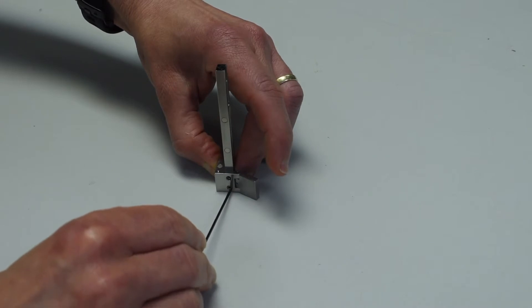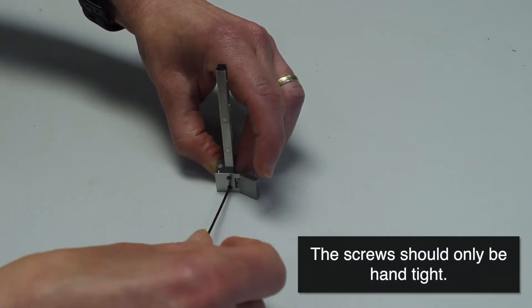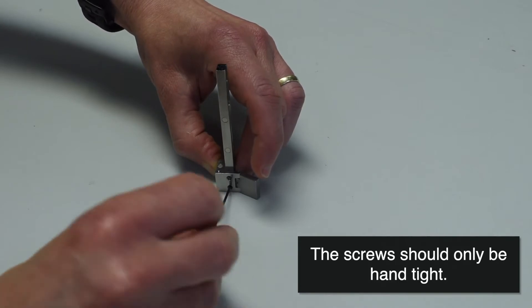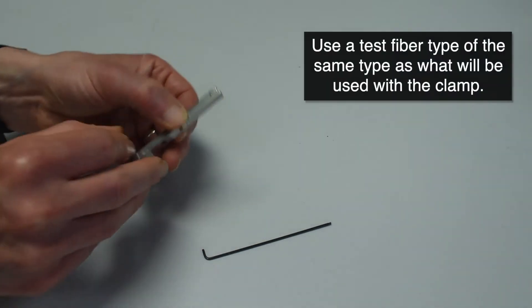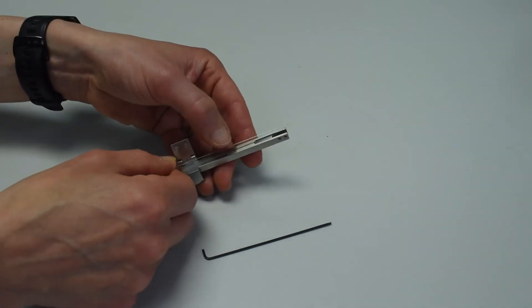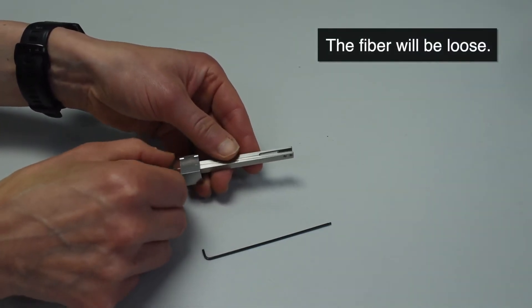The screws should not be fully tight but still able to hold the insert in place in the clamp. Take a small length of the same fiber that is going to be used with the clamp and place it in the groove of the insert. The fiber will be loose as the insert hasn't been set to the correct height yet.